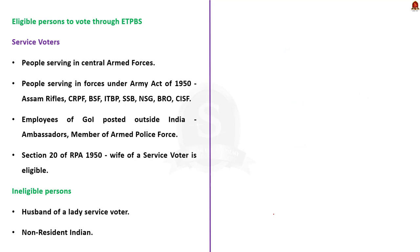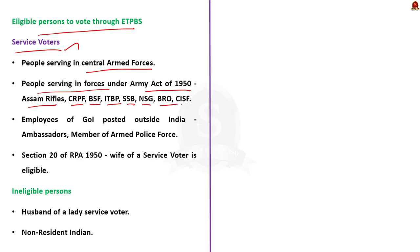Service voters are eligible to vote through ETPBS. Service voters include persons serving in the armed forces of the Union; those serving in armed police forces to which the Army Act 1950 applies — such as Assam Rifles, CRPF, BSF, ITBP, SSB, NSG, BRO, CISF, etc.; and employees of the Government of India posted outside India, such as Ambassadors of India and members of Armed Police Force posted outside India. These service voters are eligible to vote through ETPBS.